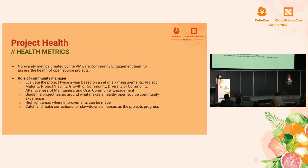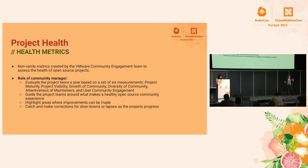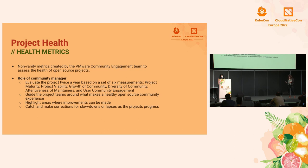Health metrics are unique to how community managers operate at VMware. We've created a guideline and set of metrics to evaluate a project's health, including things like documentation quality, maintainer attentiveness, and community involvement. We evaluate all of our projects twice a year, and we do not keep track of vanity metrics — like Twitter followers, GitHub stars, or Slack members — because at the end of the day, you can just pay for those. As a community manager, I'm most responsible for highlighting where improvements can be made after evaluations, and making corrections as the project evolves.